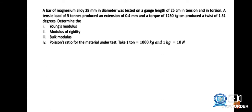Here is the problem: A bar of magnesium alloy 28 mm in diameter was tested on a gauge length of 25 cm in tension and in torsion. A tensile load of 5 tons produced an extension of 0.4 mm, and a torque of 1250 kg·cm produced a twist of 1.51 degrees. Determine Young's modulus (E), modulus of rigidity (G), bulk modulus (K), and Poisson's ratio for the material. Take 1 ton = 1000 kg and 1 kg = 10 N.